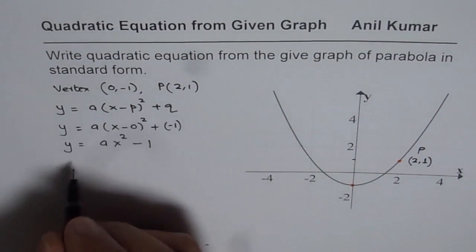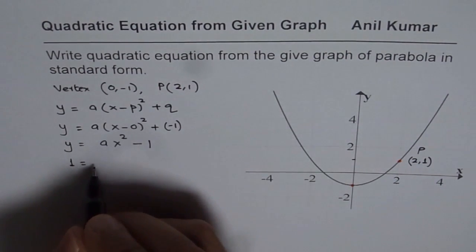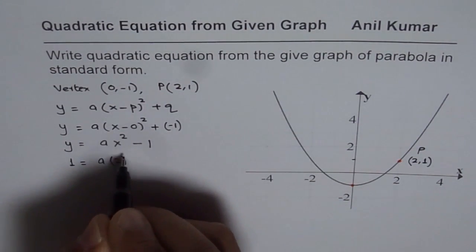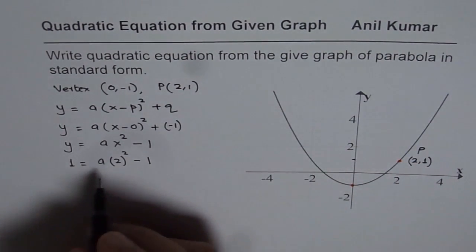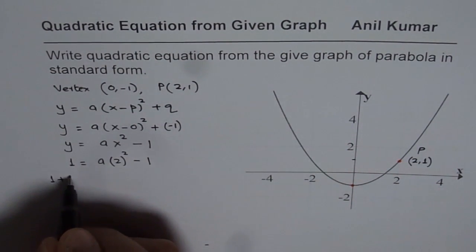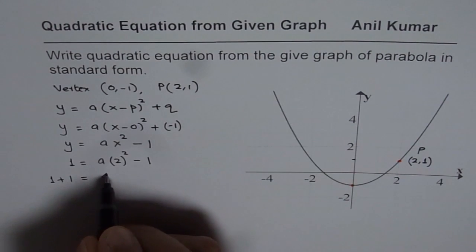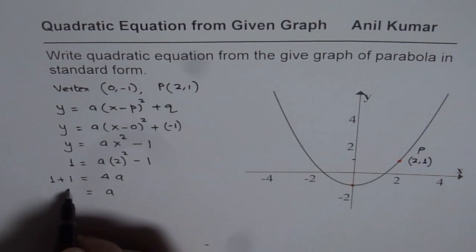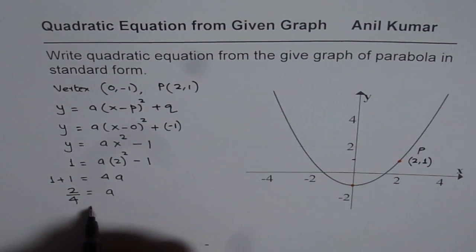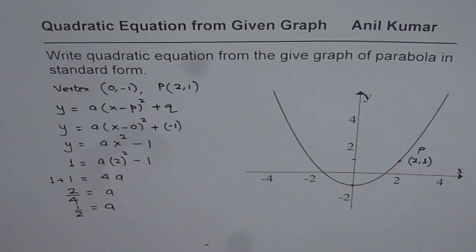So we have 1 = a(2)² - 1. Bringing 1 to the left side, we get 1 + 1 = 4a, so a = 2/4. That gives us the value of a as 1/2.